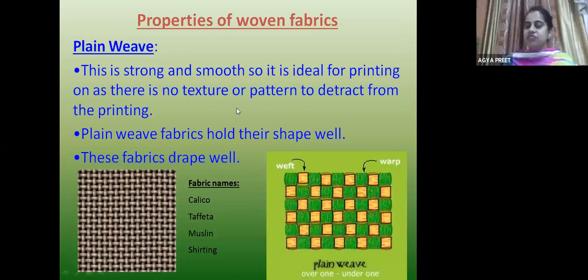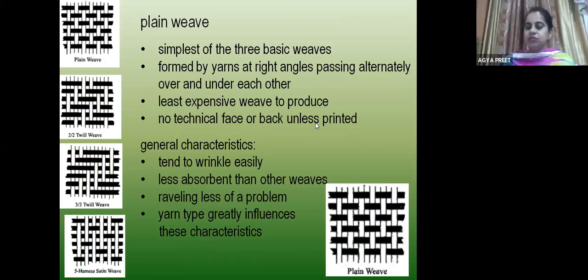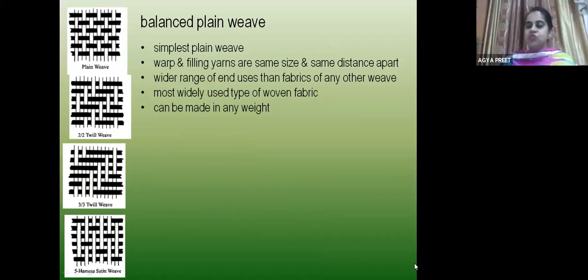Plain weave is strong and smooth — ideal for printing. Plain weave holds its shape well and these fabrics drape well. Fabric names include calico, taffeta, muslin, shirting. Characteristics: it is a basic weave formed by yarns at right angles, passing alternate over and under each other. It is the least expensive weave to produce with no technical face and back side unless it is printed. It tends to wrinkle easily, is less absorbent, and ravelling is less of a problem.